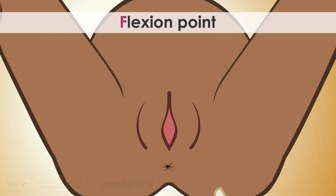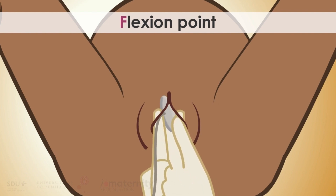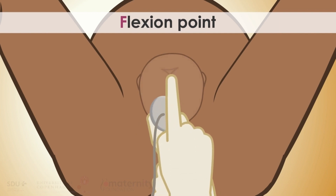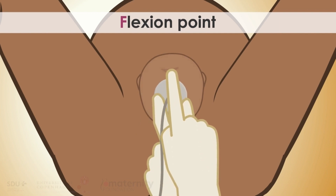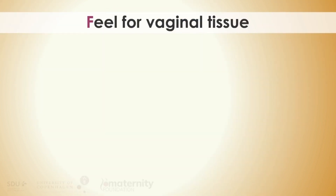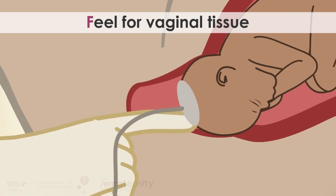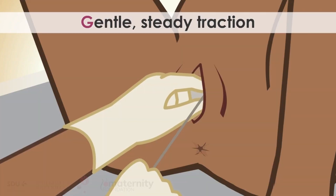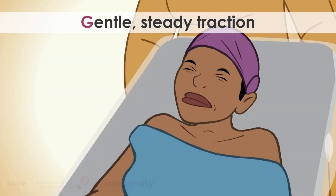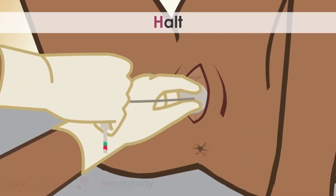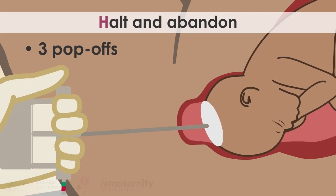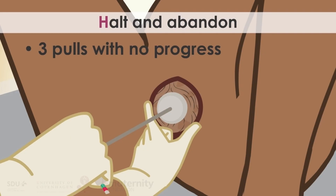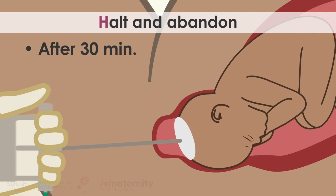Flexion point: Most cups are 3 cm from the center to the edge. Place the edge of the cup at the tip of the posterior triangular fontanelle. Feel for vaginal tissue between the cup and the fetal skull before and after applying suction to avoid trauma to the vagina. Apply gentle, steady traction with no rocking during a contraction, with the first contractions downward and during following contractions more upward. Halt in between contractions. Halt and abandon if there are 3 pop-offs, if 3 pulls show no progress, or if delivery is not achieved 30 minutes from application.